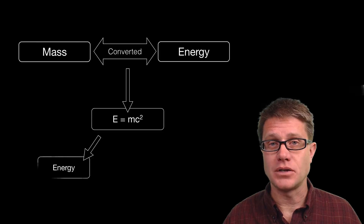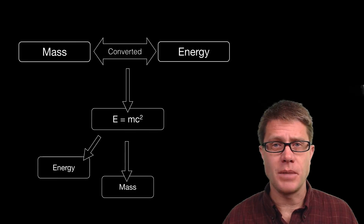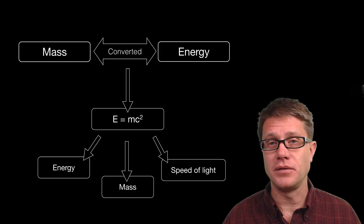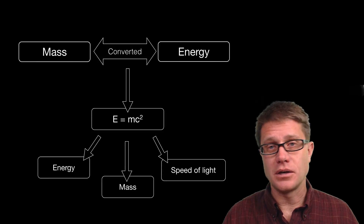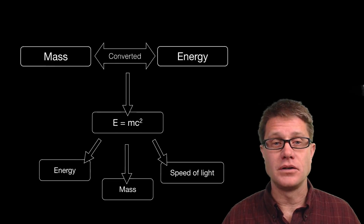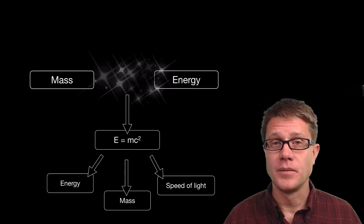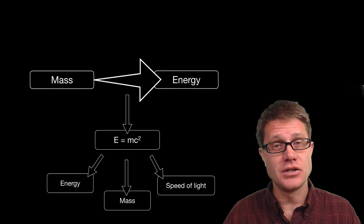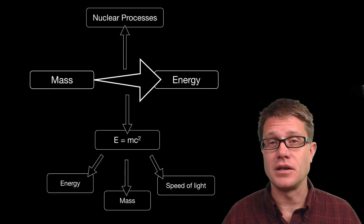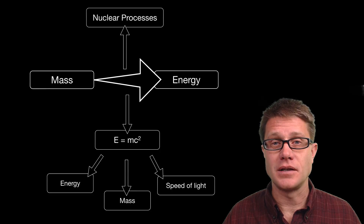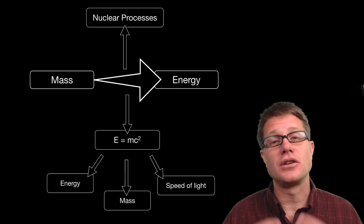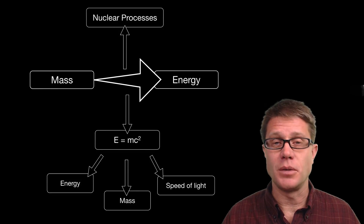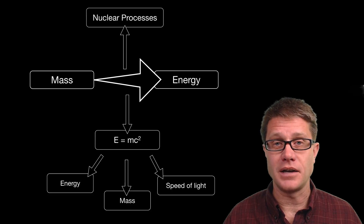Thankfully, even though that concept is confusing, the equation is very simple: E equals mc squared. E is energy, m is mass, and c is the speed of light. So we can convert one into another. If we are going from the mass to the energy side, like we would in almost any of these nuclear processes, we are going to get a huge amount of energy from a very small amount of mass.